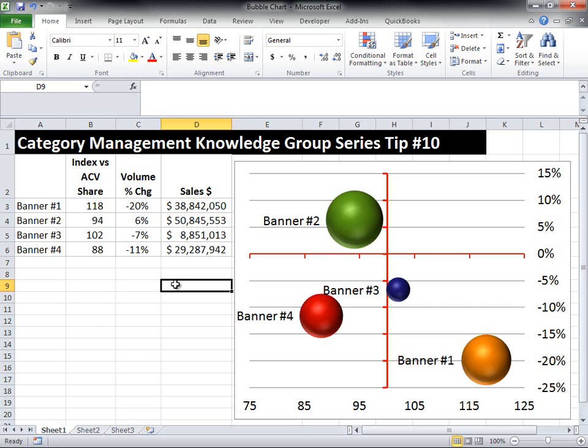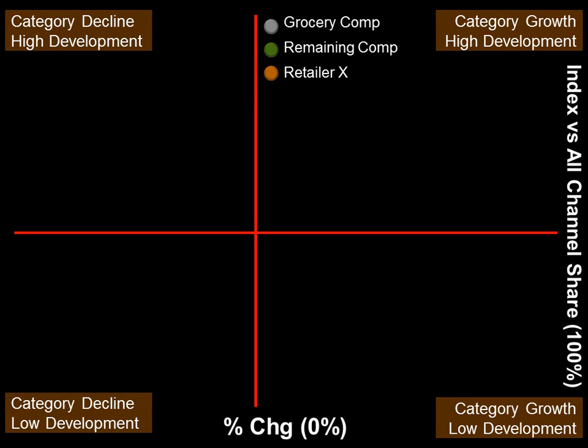We're now going to go back into PowerPoint and I'm going to show you some examples of some pretty cool bubble charts. I can look at how a retailer is doing at a regional level based on the percent change versus year ago on the horizontal axis, the index versus all channel share on the vertical axis, and dollar sales as the size of the bubble.